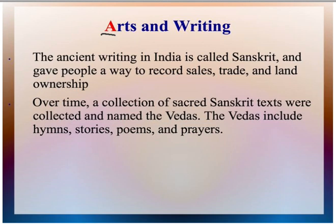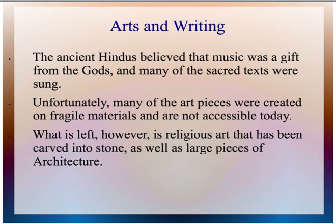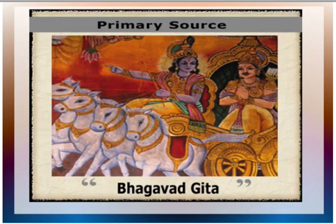Over time, a collection of sacred texts were named the Vedas, and the Vedas included hymns, stories, poems, and prayers. In ancient India, they believed that music was a gift from the gods, and a lot of these sacred texts were sung. Music, musical instruments, and singing were considered a very important art form. Unfortunately, a lot of traditional artwork — drawings and paintings created on fragile materials such as paper — are not accessible today; they simply no longer exist. What is left, however, is religious art carved into stone, as well as large pieces of architecture. This is a primary source of an art piece that did survive: the Bhagavad Gita, which is a religious text.